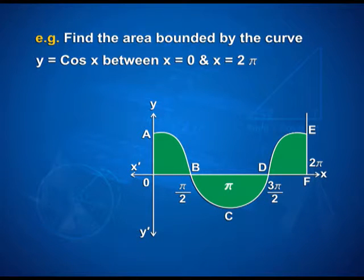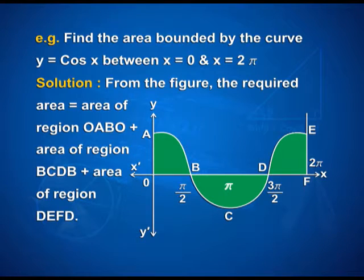Let us see one more example: find the area bounded by the curve y is equal to cos x between x is equal to 0 and x is equal to 2π. From the figure, the required area equals the area of region OAB plus the area of region BCD plus the area of region DEF. These three shaded areas are to be calculated.